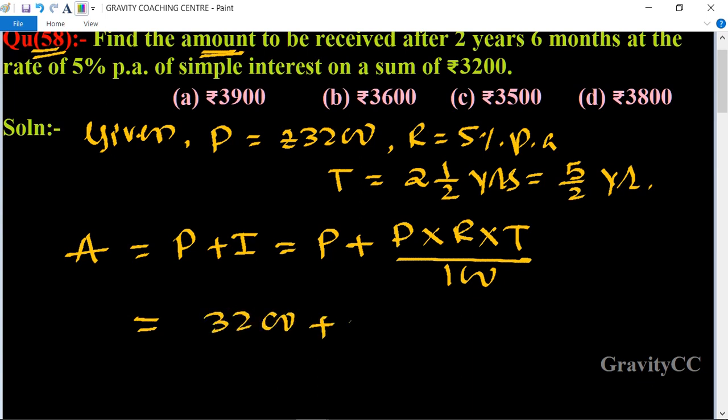Plus ₹3200 multiplied by rate 5 and 5/2 upon 100. Canceling zeros, 32/2 = 16, then 16 × 5 × 5 = 400, so equals ₹3200 + ₹400 = ₹3600.